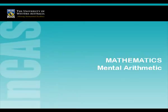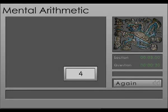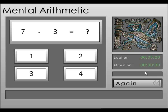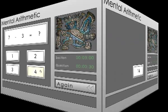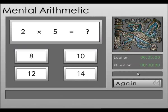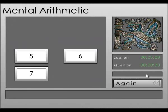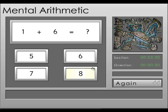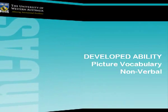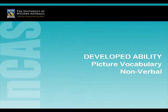Mental arithmetic asks the students to perform mental calculations. Developed ability is all about non-literacy or numeracy based skills — it gives an indication of the student's readiness to learn.